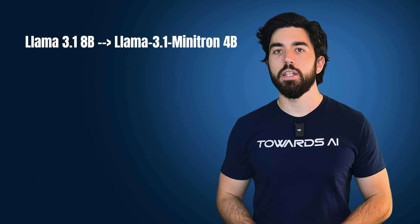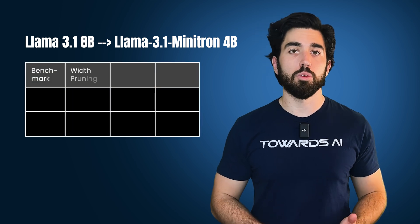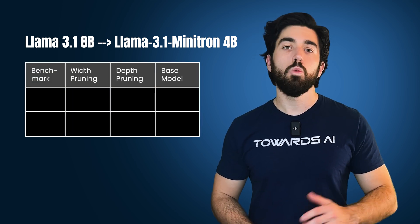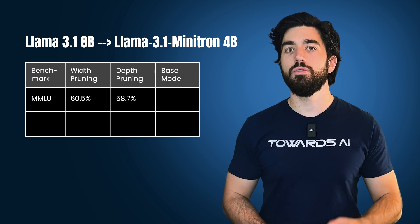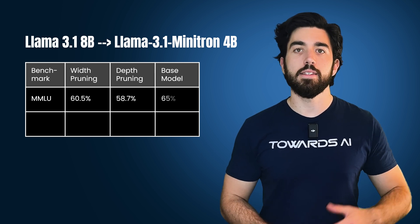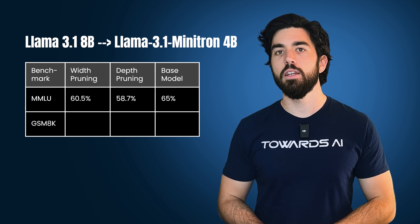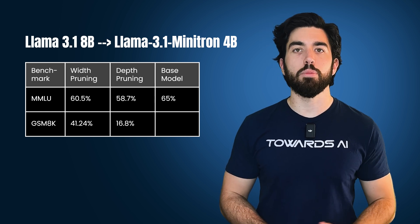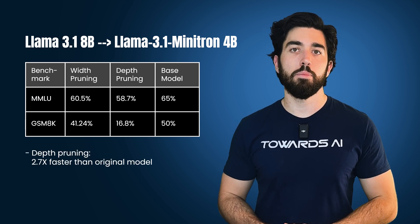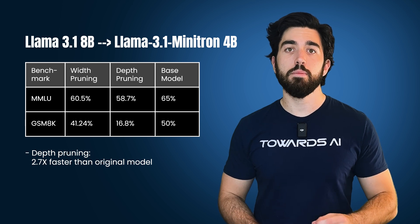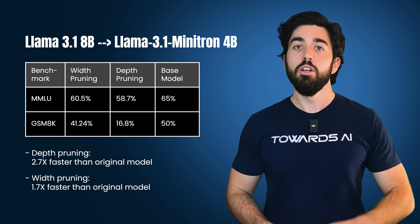For LLAMA 3.1 8B, they compressed it down to 4B parameters — half the size — and tried both width pruning and depth pruning to see which worked better. Width pruning came out on top for accuracy, with a score of 60% on the MMLU benchmark, compared to 58% for depth pruning and 65% for the base model. When they tested reasoning ability, there was a huge difference: GSM 8K accuracy was 41% for width pruning, but dropped to 16% for depth pruning, versus 50% for the base model.